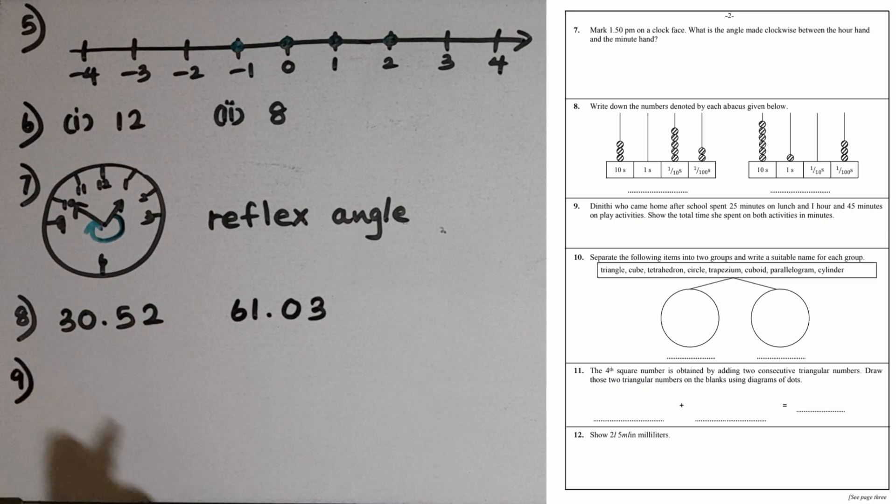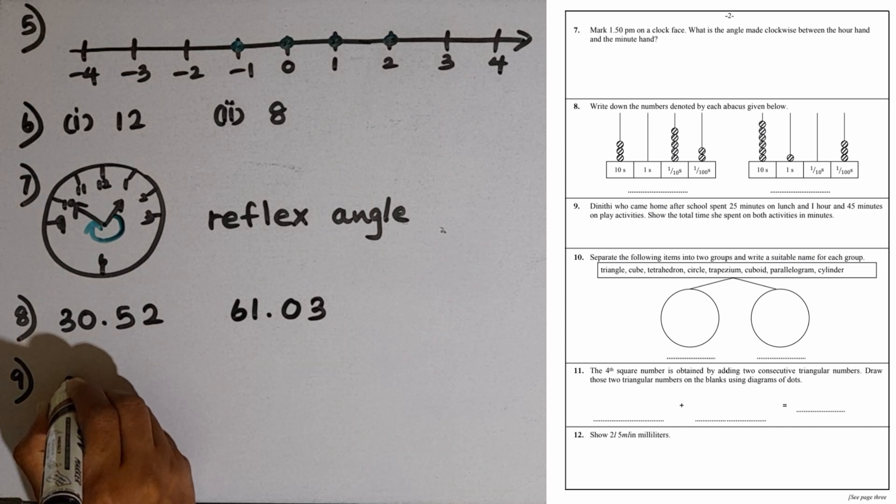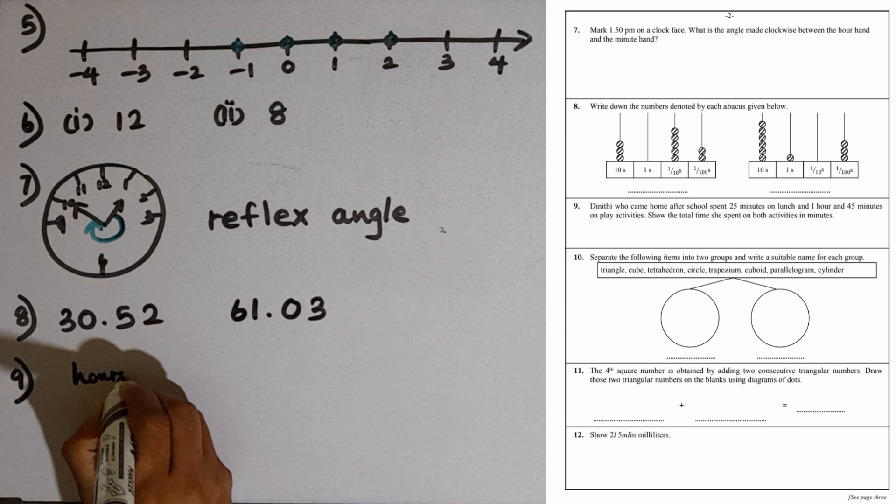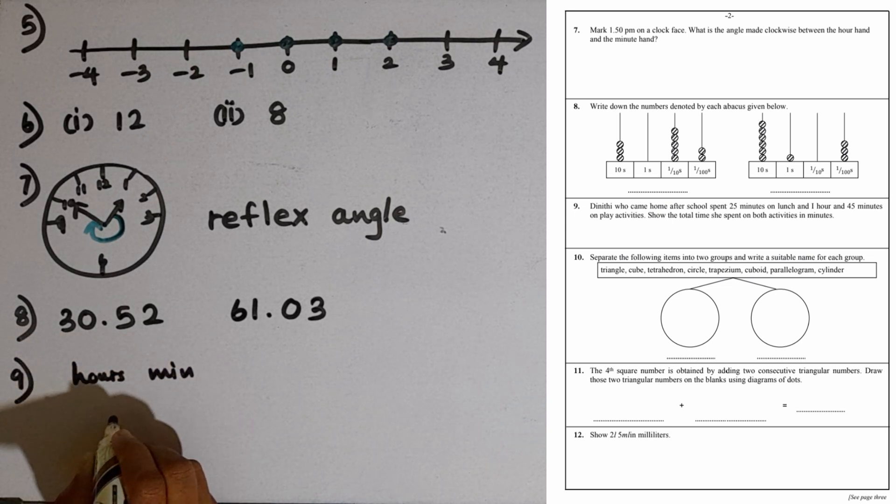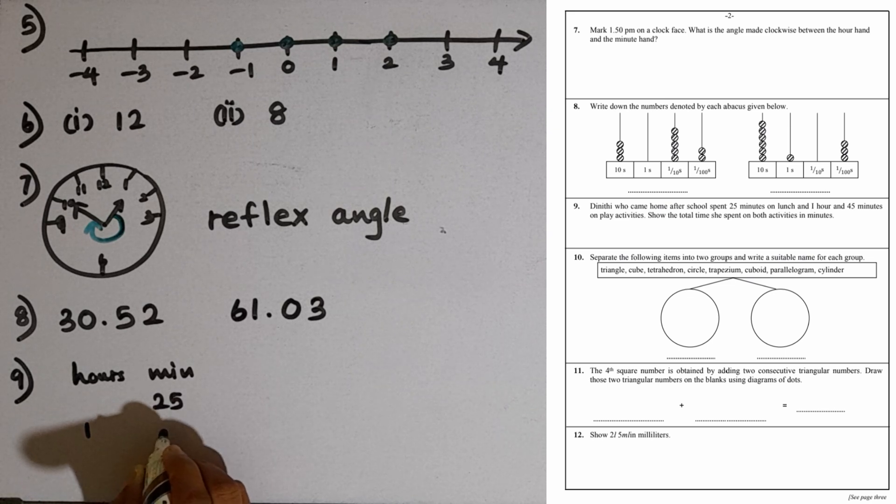Question number nine: Diniti who came home after school spent 25 minutes on lunch and 1 hour 45 minutes on play activities. The total time she spent on both activities in minutes. We have to take the addition: hours and minutes. First activity 25 minutes, second one 1 hour 45 minutes.